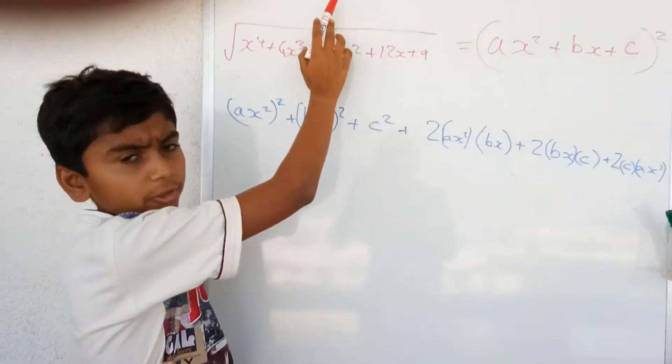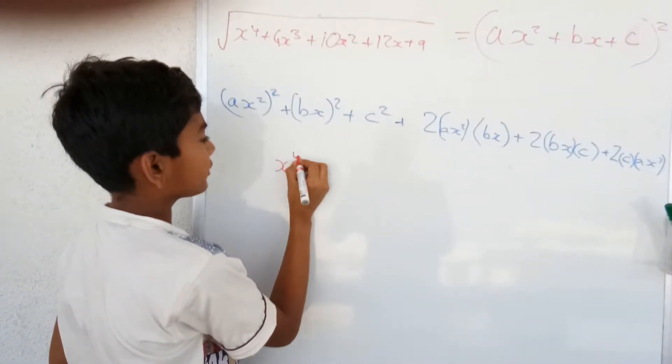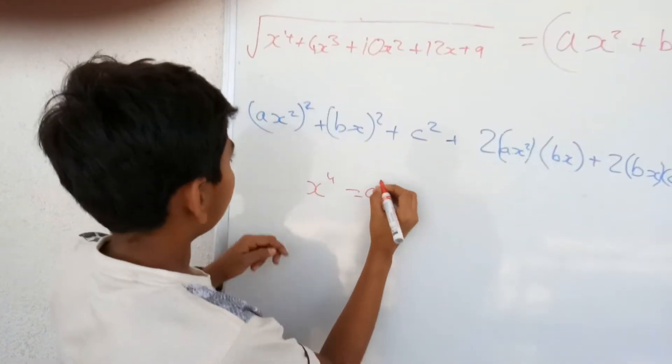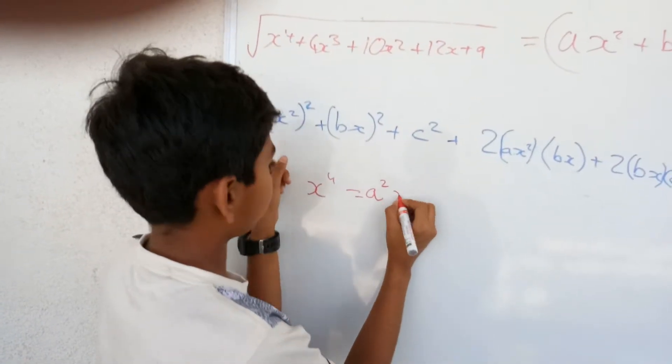Firstly, I am going to equate this part, x to the 4. x to the 4 is equal to this part because the degree is same. So, x to the 4 is equal to a square x to the 4.